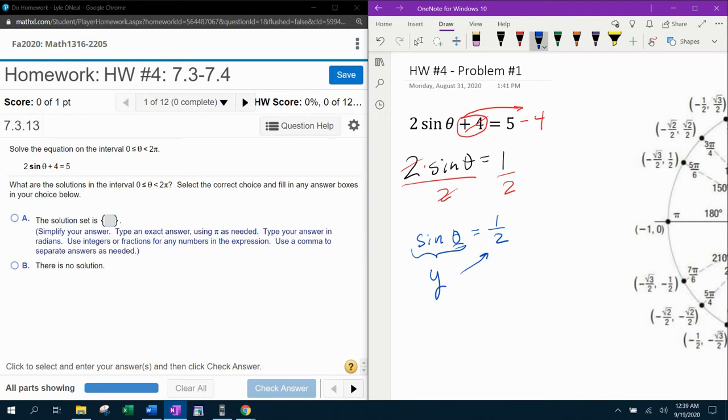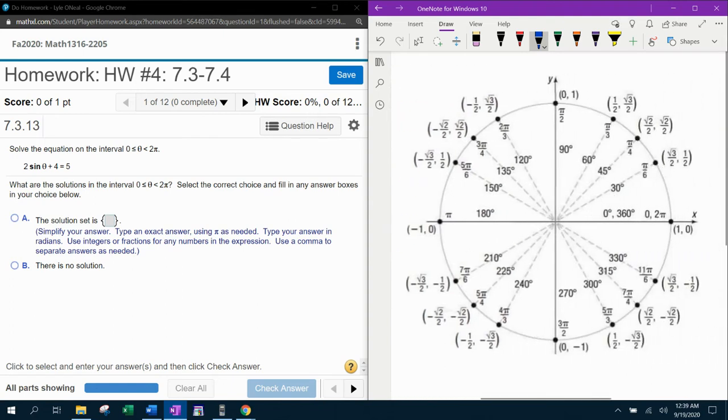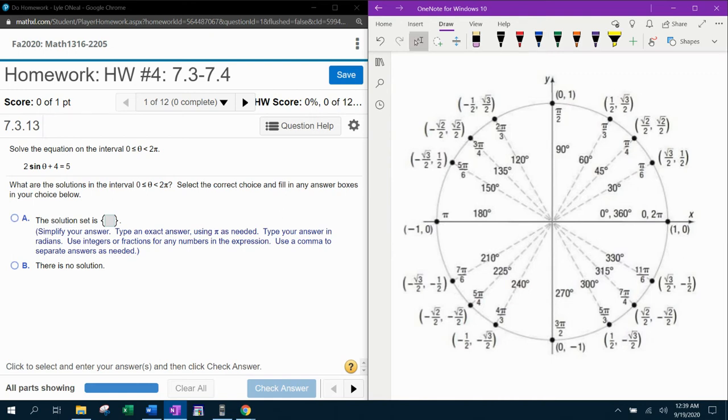That's basically what this means. If sine theta equals a half, then the y-coordinate in the unit circle has to be a half. So where does that occur? Where is y positive half?